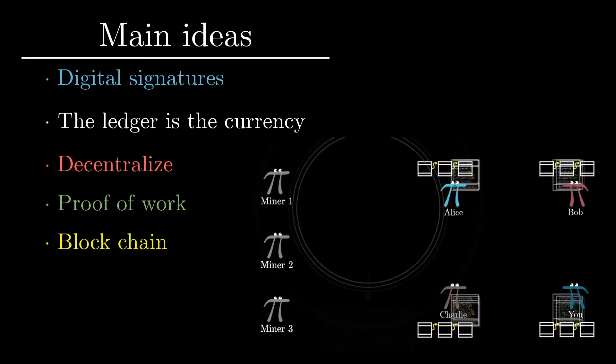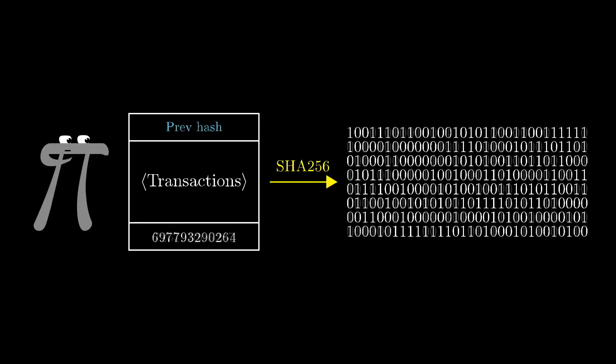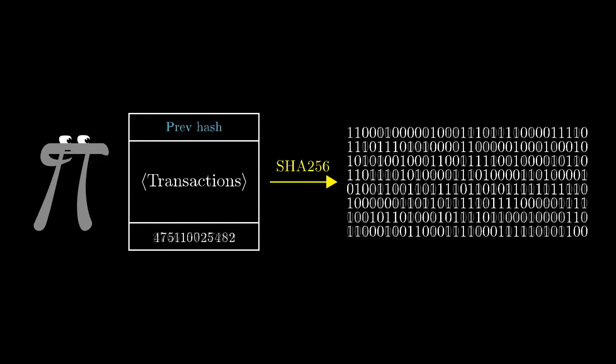And with that, we've hit all the main ideas. This distributed ledger system based on a proof of work is more or less how the Bitcoin protocol works, and how many other cryptocurrencies work.